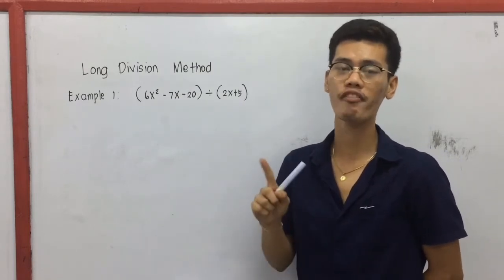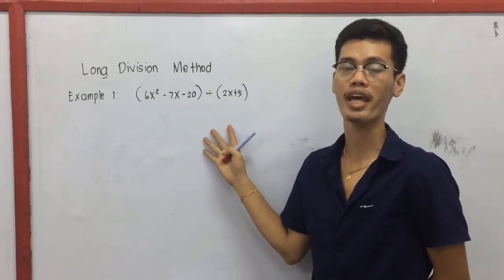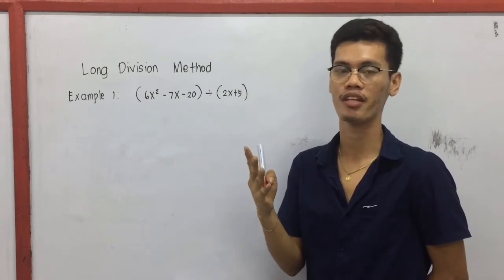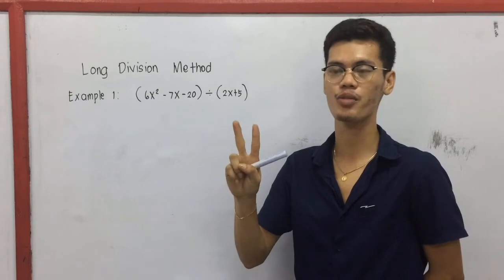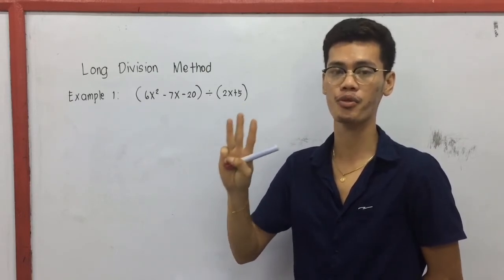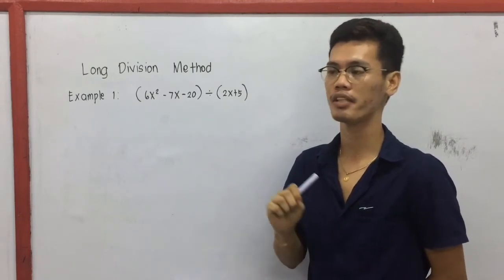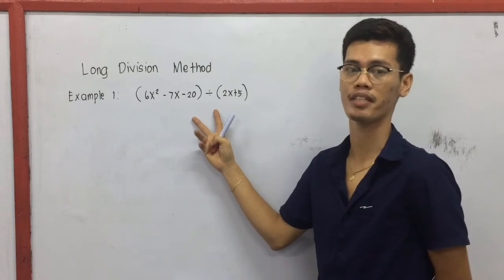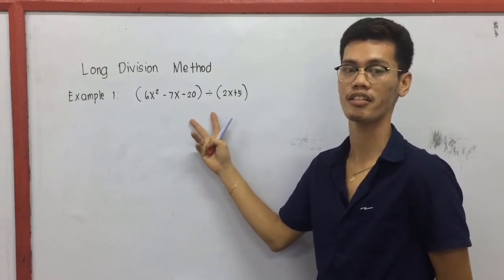In order to get the quotient of this given problem, we have four main steps to be followed. First is we have to divide, second is we have to multiply, third is to subtract, and fourth is to bring down. But first, we have to set this problem into a long division format.